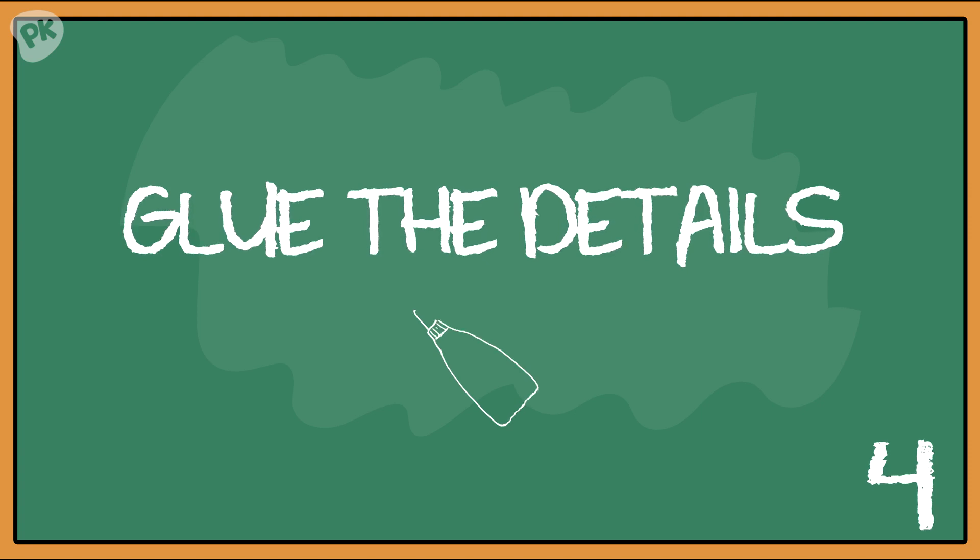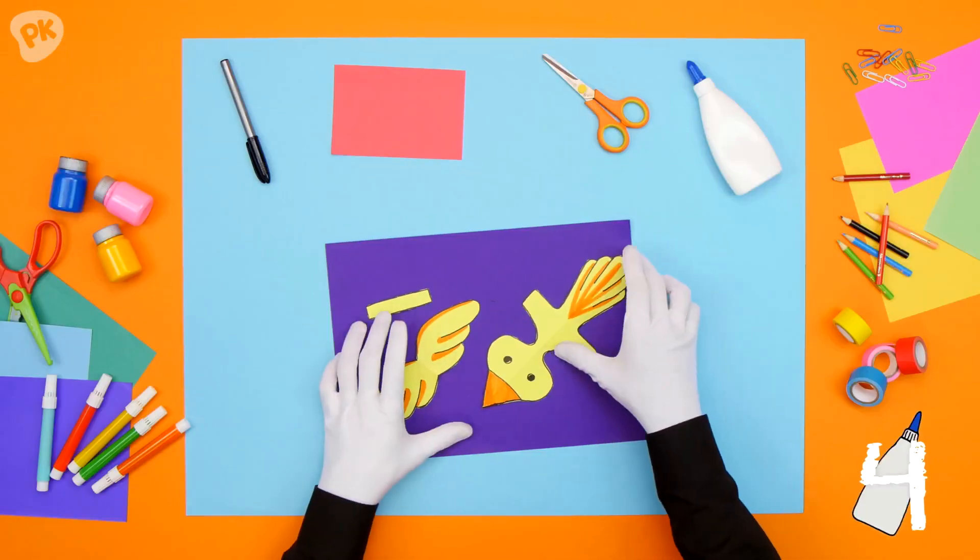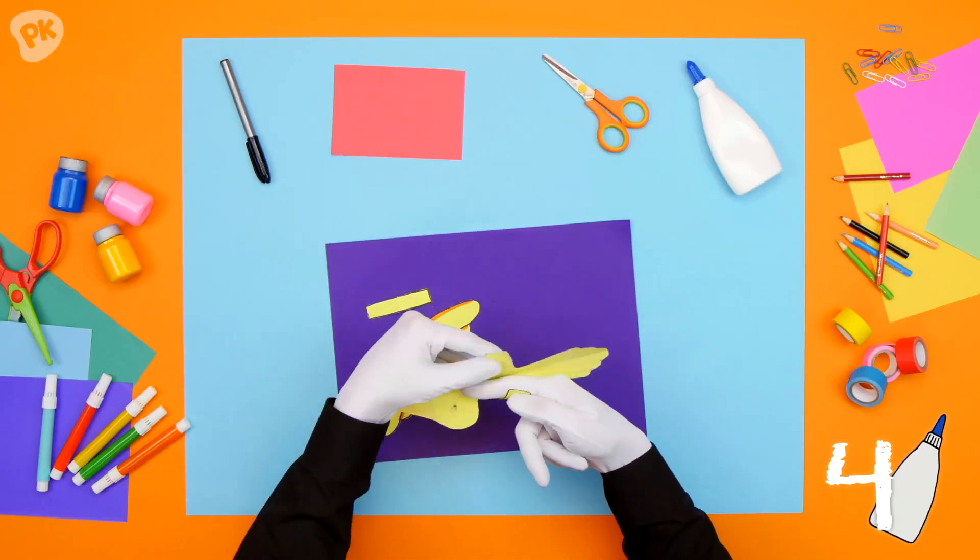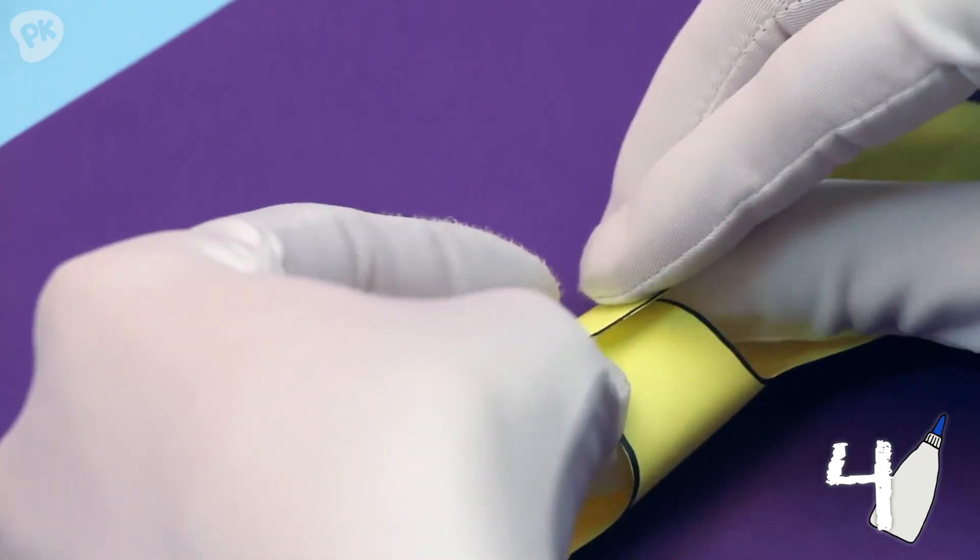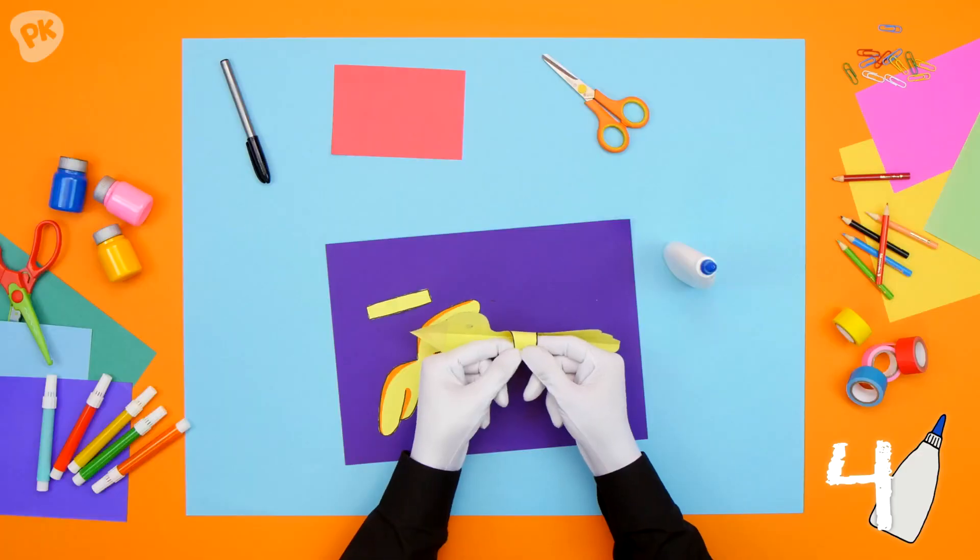Step 4. Let's get our glue on. Gently put some glue on the tip of the strips that will wrap around your finger like this. Stick them together making a ring and voila! Perfect fit!